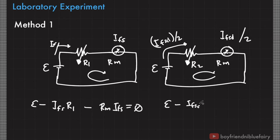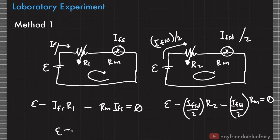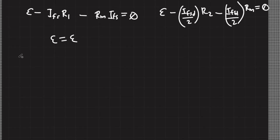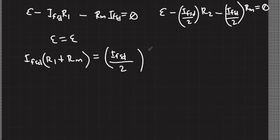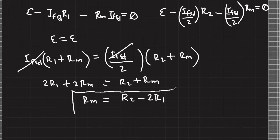Since this is one complete loop, only one value of current passes through the circuit — I_fsd over 2. Applying Kirchhoff's loop rule: E minus (I_fsd/2) times R_2 minus (I_fsd/2) times R_m equals zero. These two equations share the same EMF, so equating them and solving gives us a value for the internal resistance of the galvanometer.